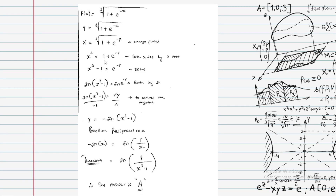Since e to the power of minus y equals x cubed minus 1, taking ln of both sides: minus y equals ln(x cubed minus 1). Multiply both sides by minus 1: y equals minus ln(x cubed minus 1).